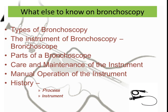Here is the list. First is the types of bronchoscopy. Then is the description of the instrument used for bronchoscopy — the instrument known as the bronchoscope. Third is the parts of a bronchoscope. Fourth is the care and maintenance of the instrument. And finally, the manual operation of that instrument. And nothing is complete without history — so I must also mention the history of both the process as well as of the instrument.